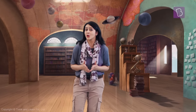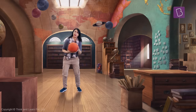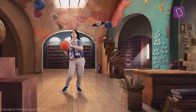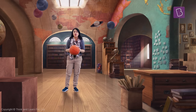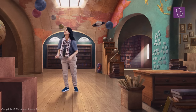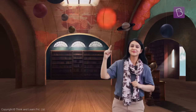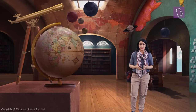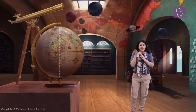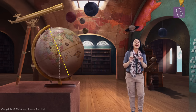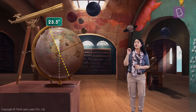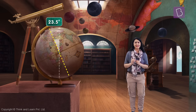Ever seen anyone spin a basketball on their fingertips? Pretty cool, right? So the axis here would be right through the center of the ball — and that's pretty much how it is for the earth. The only difference is that the axis of the earth is a little tilted.